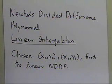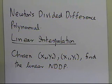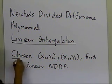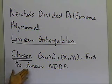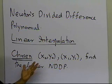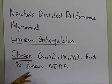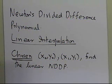Let's see how linear interpolation is done using Newton's divided difference polynomial. Some people might ask what 'chosen' means here. The reason we say 'chosen' is because we may be given a lot of points, but when doing linear interpolation, we only choose two points. We'll address how to choose those two points when given, say, 100 data points.